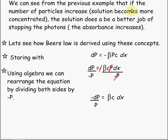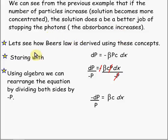We can see from the previous example that if the number of particles increases — that is, the solution becomes more concentrated — the solution does a better job of stopping the photons; that is, the absorbance increases. Now let's see how Beer's Law is derived using these concepts.